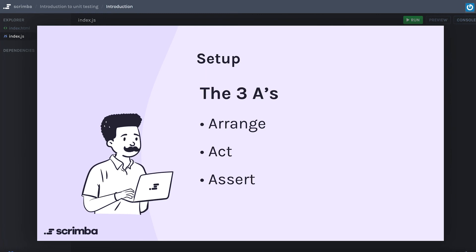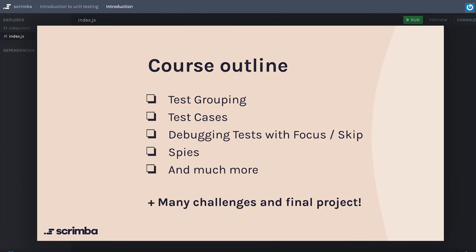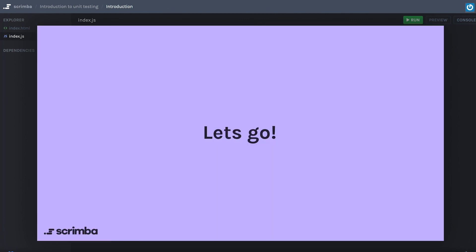As we go, we're going to talk about the Three A's — it's technically 3.5 but I don't want to complicate things. That's the Arrange, Act, Assert pattern. When we write our unit tests, we're going to arrange the state of the data, then act on whatever it is we're testing — whether it's clicking something open — and then assert that it in fact opened in that state. We'll also cover grouping test cases, how to debug your tests using focus and skip, spies and creating mocks, and we'll have challenges, a final project, and a lot more.